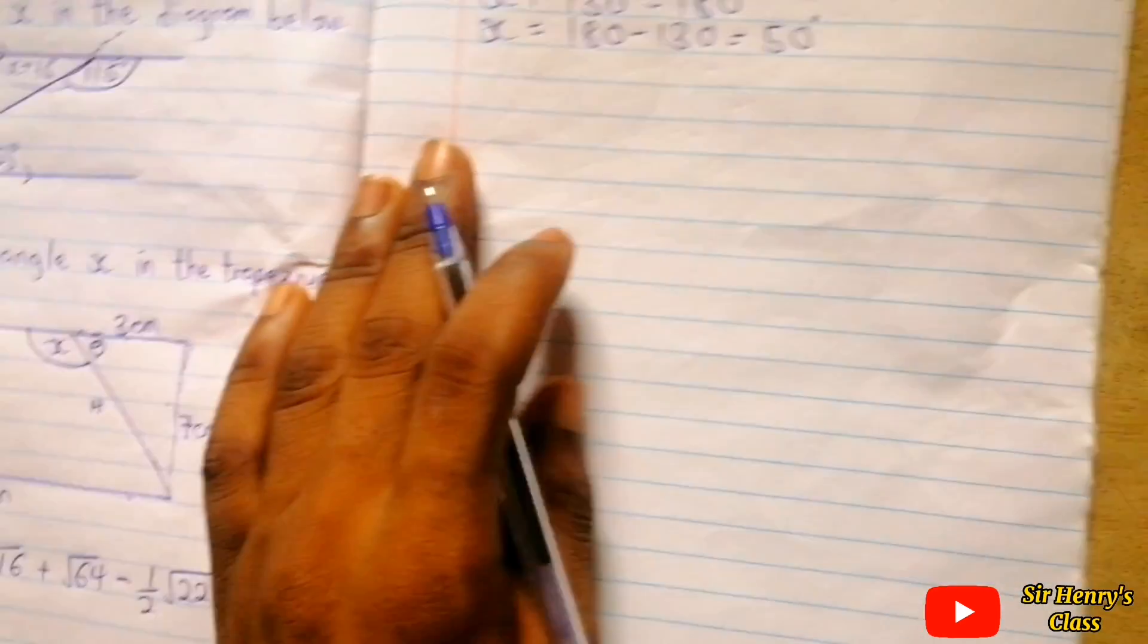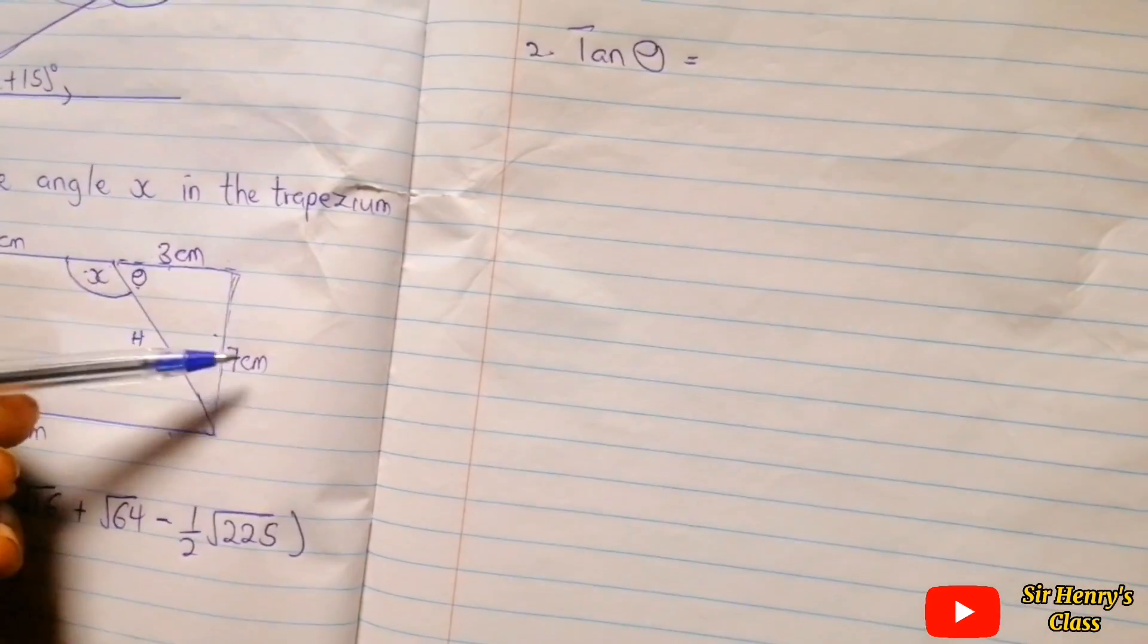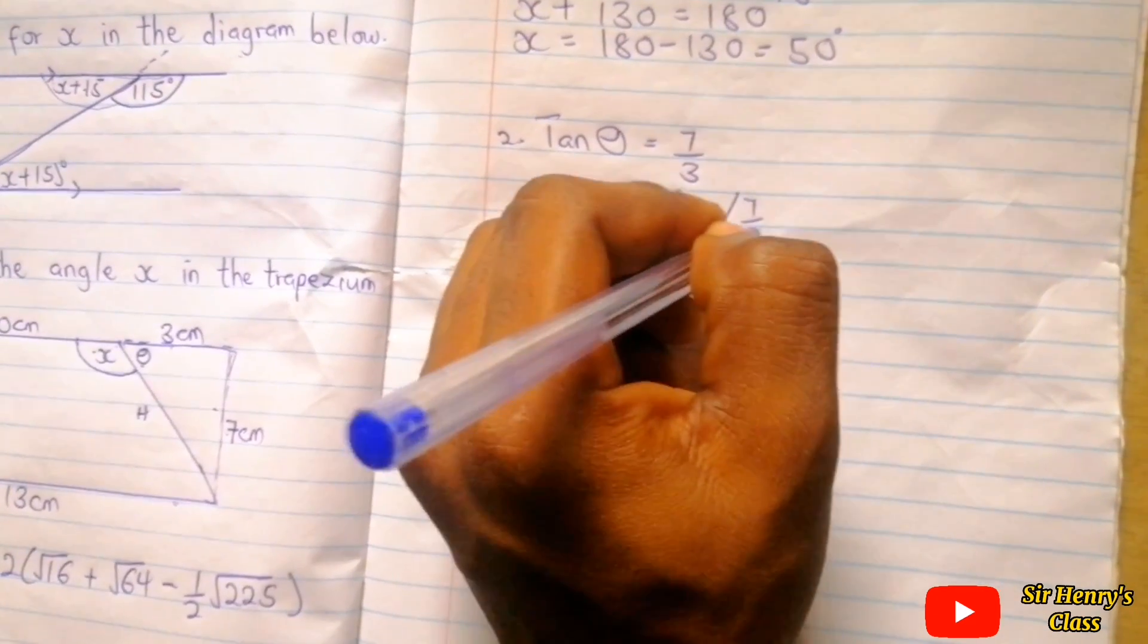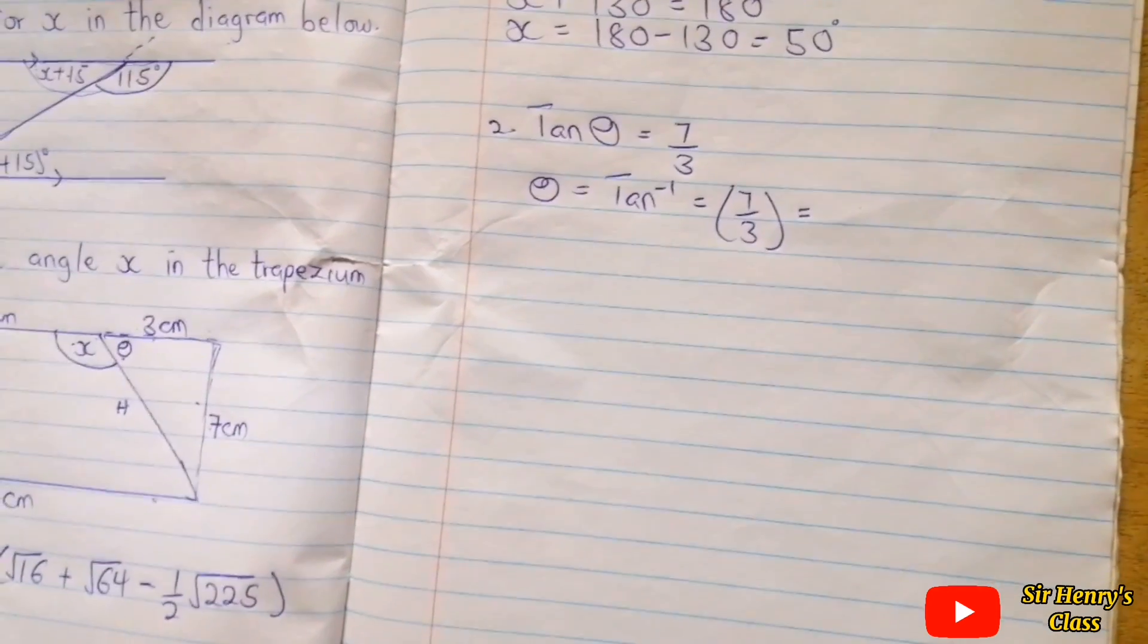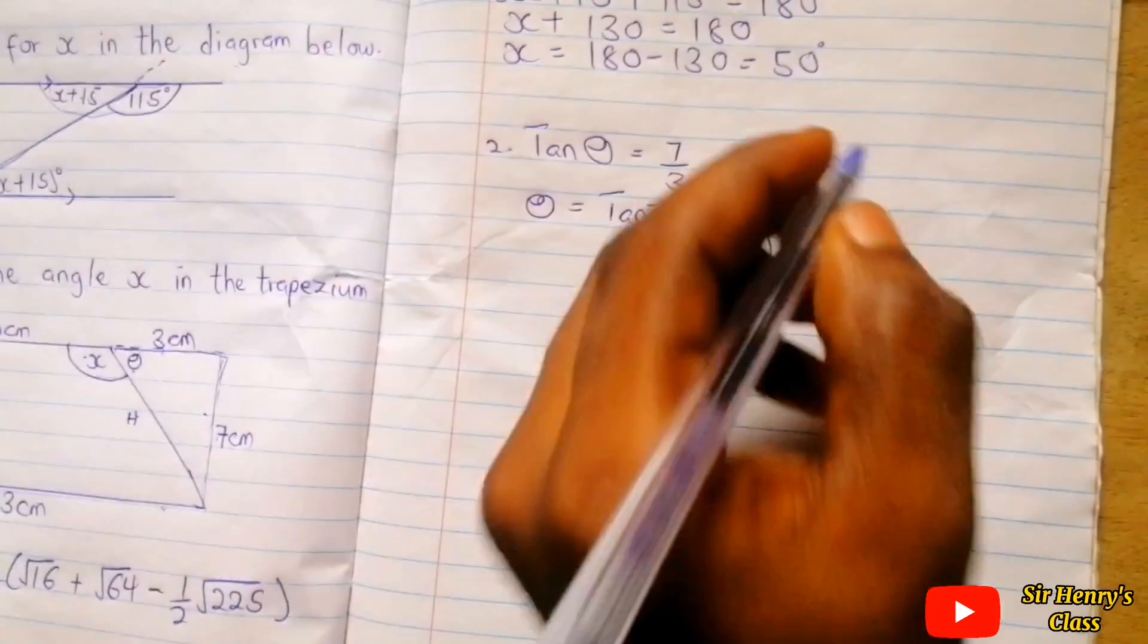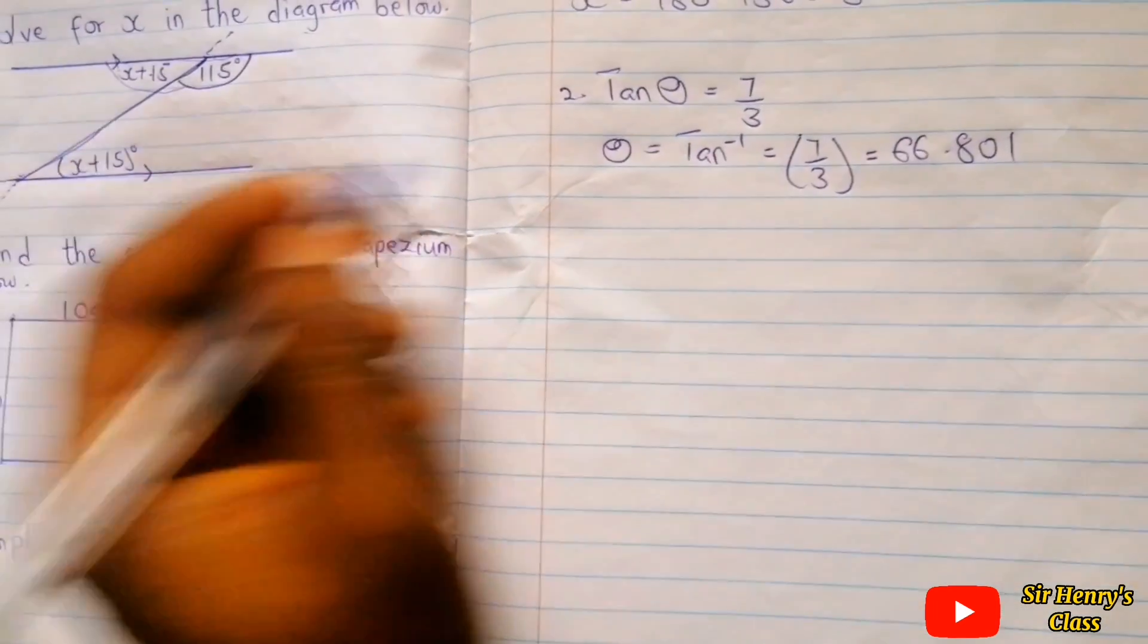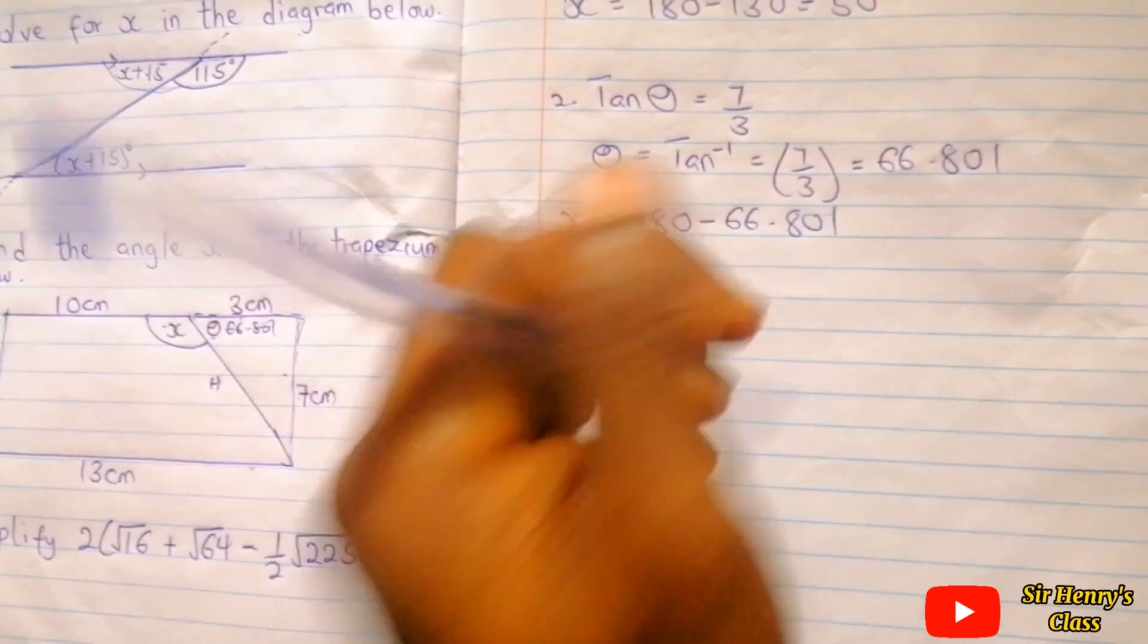This side is hypotenuse, this side is facing the angle so we'll say it is opposite, and this is adjacent. So we'll use tan. We'll say tan theta. Let's find the value of tan theta. Opposite here is 7 and adjacent is 3, so 7 over 3. So we find the inverse of tan, that will be 7 over 3. Tan inverse of 7 over 3, and that will give us 66.801.